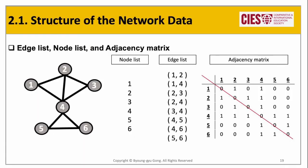To build your data for network visualization, you need to structure your dataset to represent an edge list or adjacency matrix. Only with a node list, we cannot visualize the network data. However, to create a network showing node attributes, you need to build a dataset that includes a node list in addition to the edge list or adjacency matrix. The key point is: whatever data you have, once you can convert it into an edge list or adjacency matrix, you can create your own network data and graph.